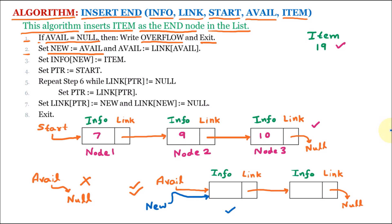Now avail will move forward. So here avail is equal to link of avail. We know that avail is a pointer having the address of the first node, and the link portion contains the address of the next node. So avail is equal to link of avail means avail is going to the next node. Now avail no longer has the address of the first node; it is having the address of the next node.